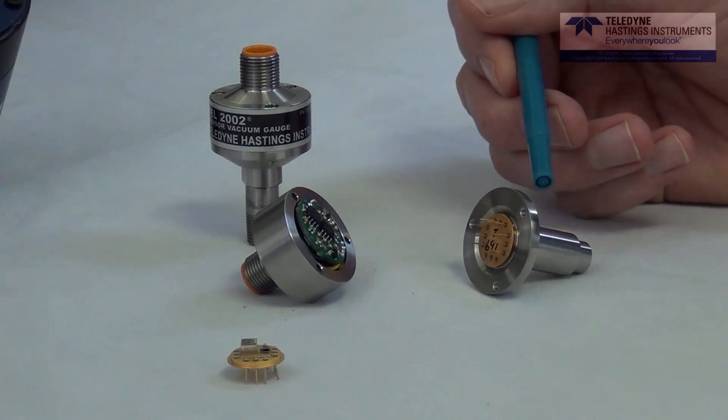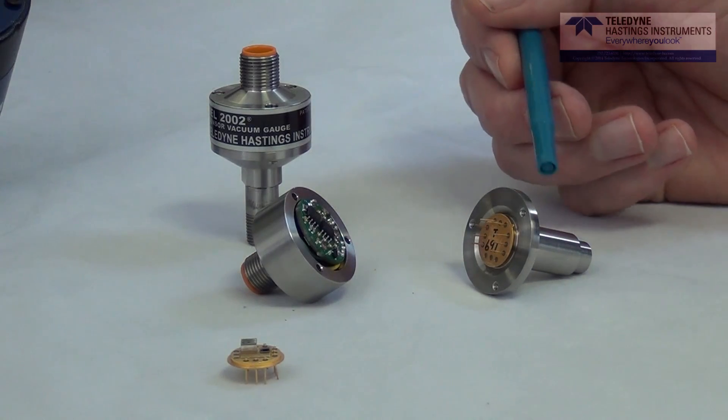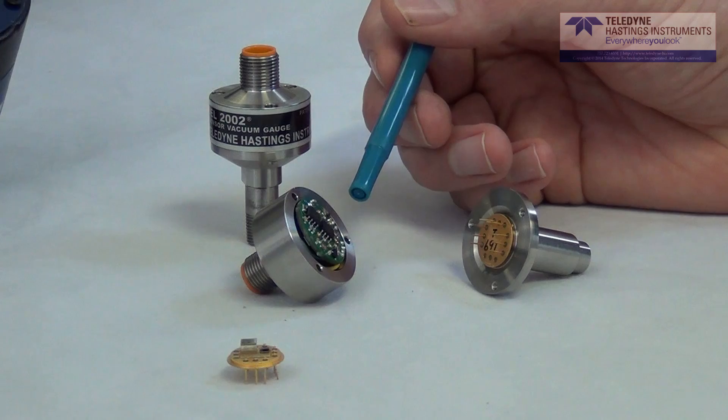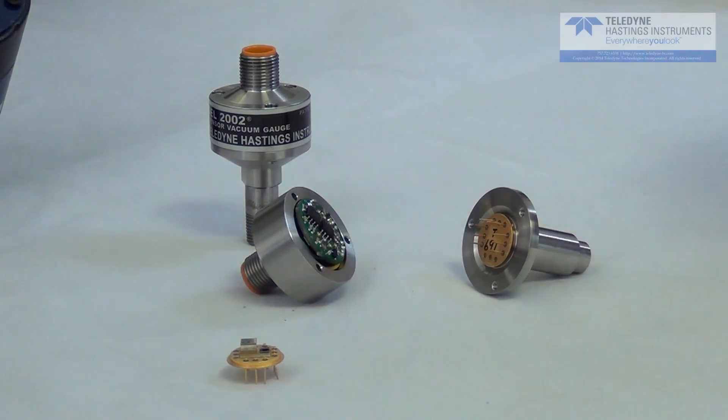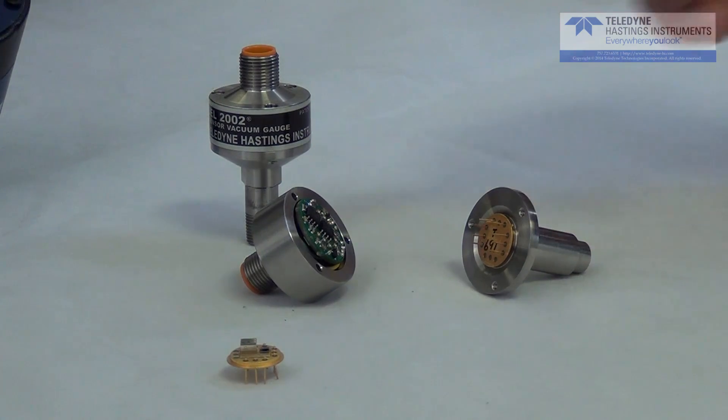So our next step is to take this sensor tube stub assembly and couple it to the cap assembly shown here. Now the cap assembly includes a small PC board that helps to operate the two sensors. But one of the best features of this arrangement is an EEPROM memory chip which stores the calibration information about each tube.